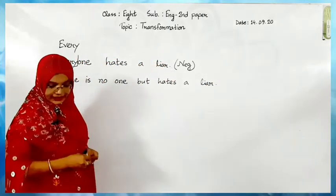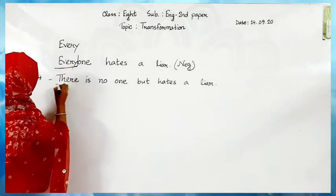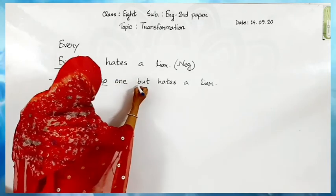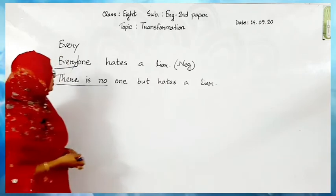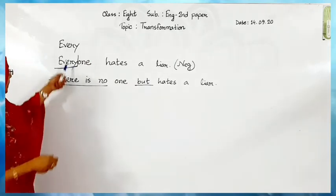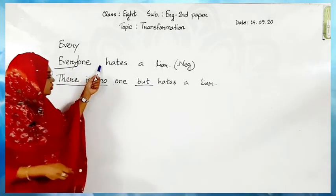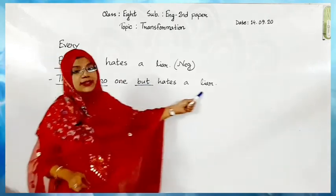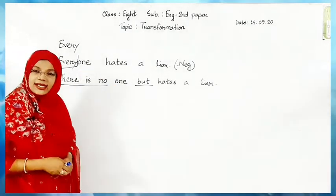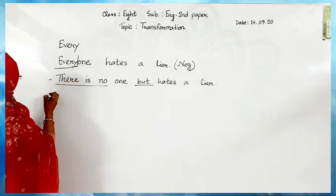So to summarize: for 'every,' there is no, then 'one,' then according to the rule 'but,' then 'hates a liar.' That is one category of changing it into negative. There is another category also, and I am writing the answer with that category now.